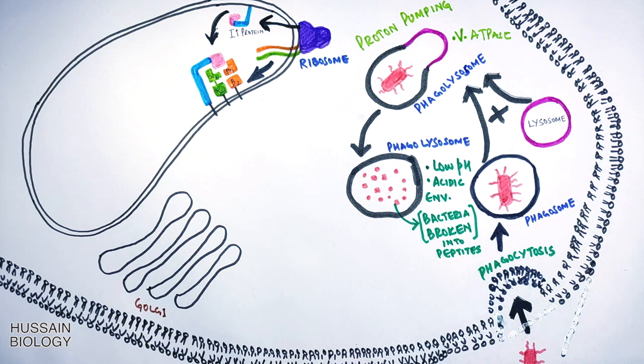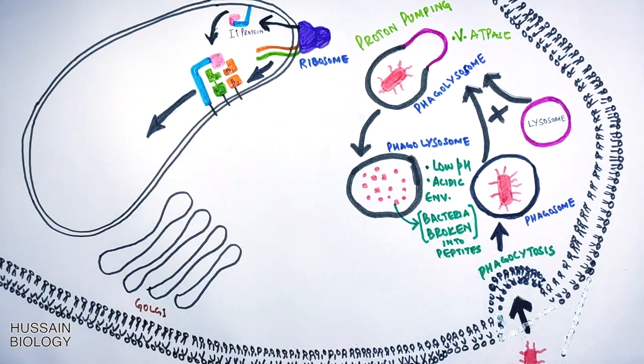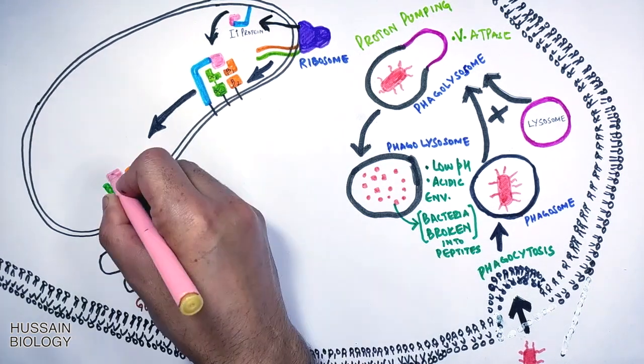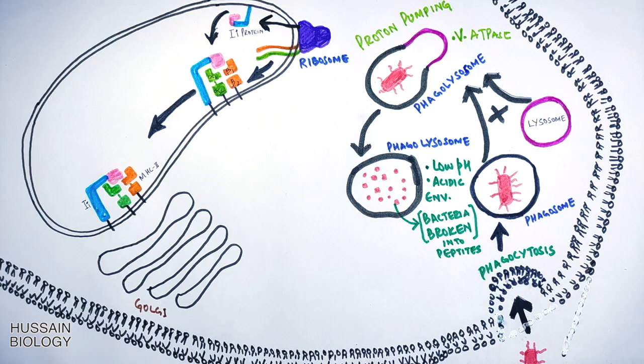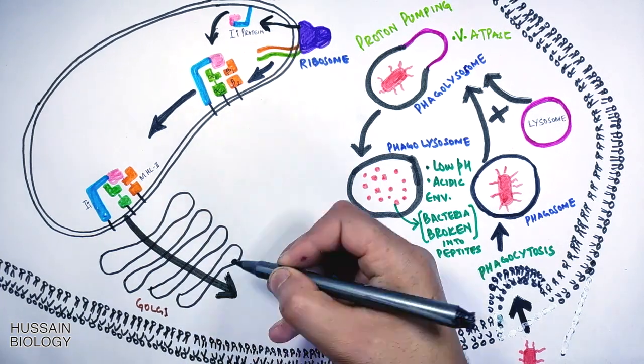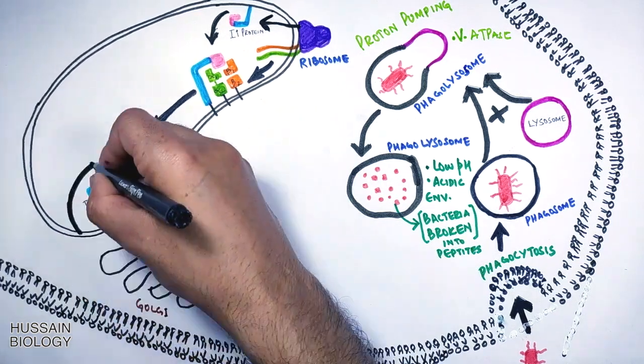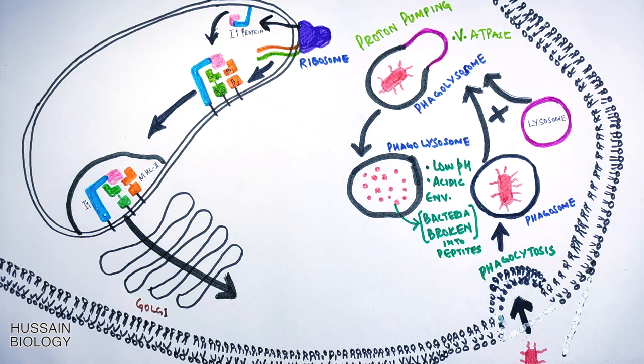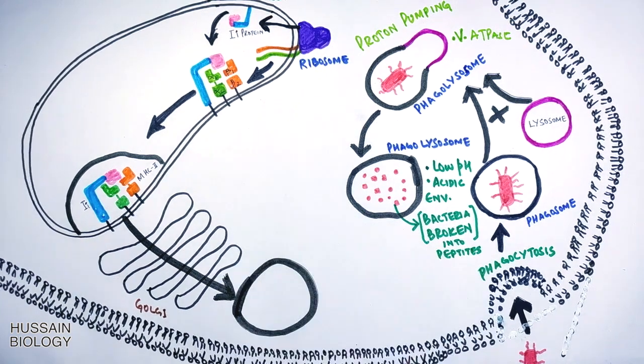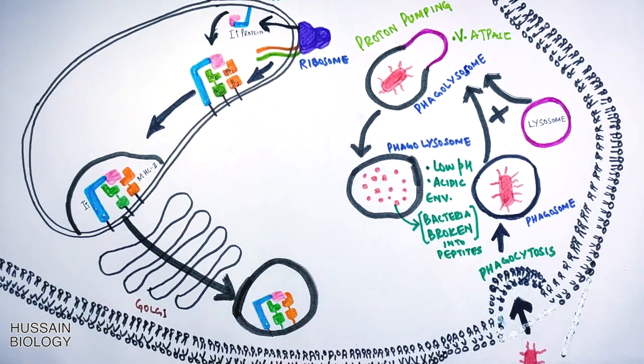Now with this the MHC-II cannot bind any antigen till II protein is bound. Now we see the invariant chain has the endocytic sorting signals in its cytoplasmic tail. So the MHC-II molecule along with II protein is exported out of endoplasmic reticulum and is sent to the Golgi apparatus. The MHC-II molecule with invariant chain exits the Golgi apparatus in the form of endosome.